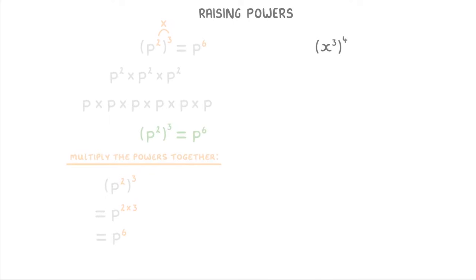Moving on to the next example, let's answer this one just using the shortcut. Because we have x to the power of 3, all to the power of 4, we need to multiply the 3 and the 4. So x to the power of 3 times 4, which is x to the power of 12. And that's it.